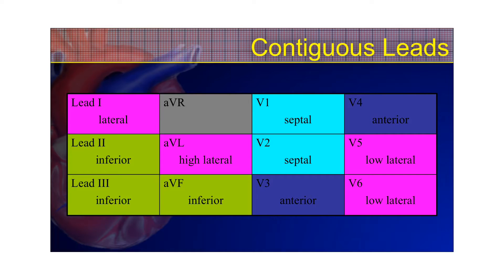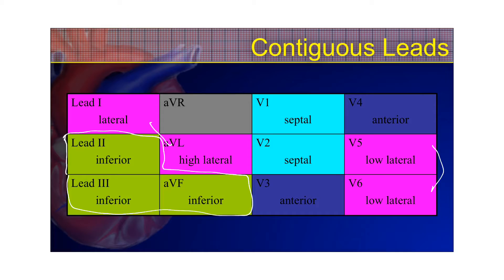We should review what contiguous leads are, since our STEMI criteria requires one millimeter of ST elevation in two or more contiguous leads. Contiguous leads are those that look at the same area of the heart. Leads 2, 3, and AVF are contiguous; leads 1 and AVL are the high lateral leads; V5 and V6 are your low lateral leads, though they can be considered contiguous to leads 1 and AVL. V1 and V2 are your septal leads; V3 and V4 are your anterior leads.